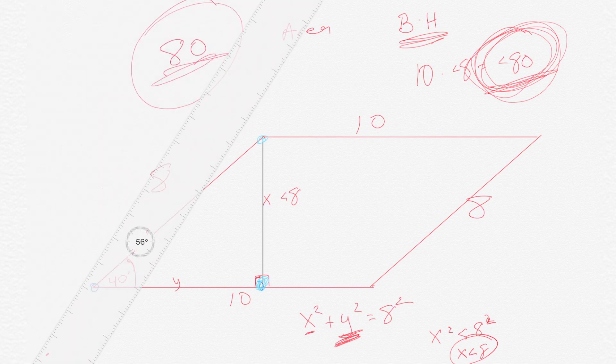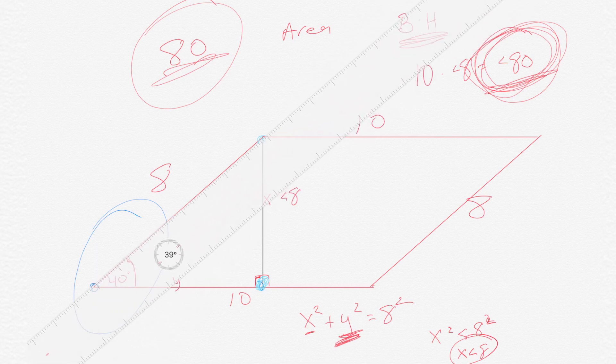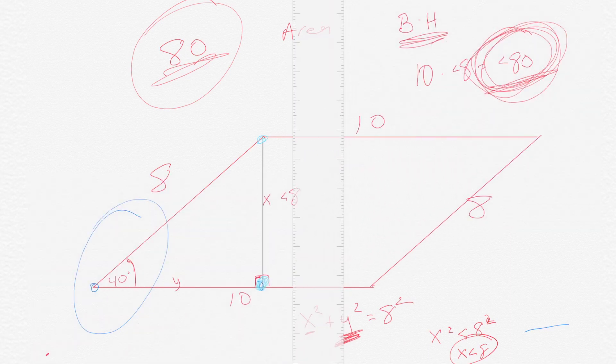Just for the heck of it, if this is 40 degrees, this angle is 40 degrees, right? Which we measured that from the outset, that's 40 degrees. And then we measure that side is 8, that side is 8, that side is 10, that side is 10. Just for the heck of it, let's measure that height.